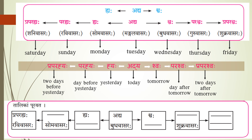Now let us fill in the blanks given below. The first box is praparahyaha, Ravi vasaraha. So a day after that would be parahyaha, Soma vasaraha. Then Mangal vasaraha. Then adhya, Buddha vasaraha. Shvaha, Guru vasaraha. Parashvaha, Shukra vasaraha. Praparashvaha, Shani vasaraha.